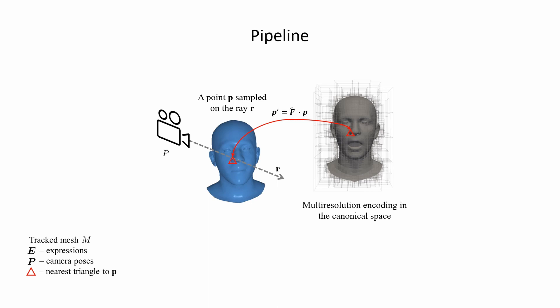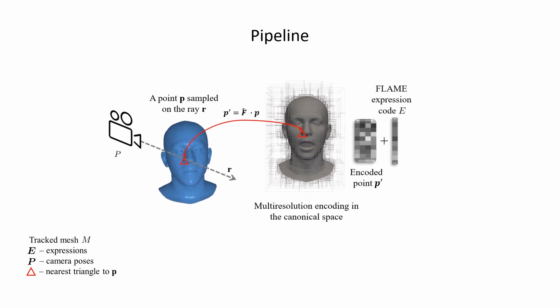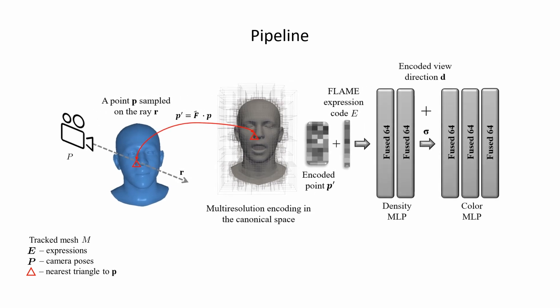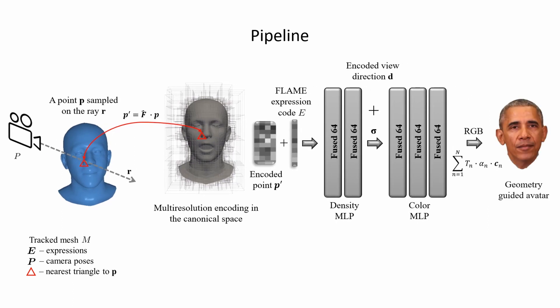We use neural graphics primitives to represent the radiance field in the canonical space. A warped point p prime undergoes encoding based on a multi-resolution grid. Additionally, expression coefficients from the tracked parametric phase model are concatenated with the encoded feature vector. This feature vector is fed to the density MLP, which predicts log-space densities and an intermediate feature for the color MLP. The color MLP adds view-dependent color effects based on the additional encoded view direction d. Ultimately, we integrate all color samples on the ray to get the final RGB value for a given pixel.